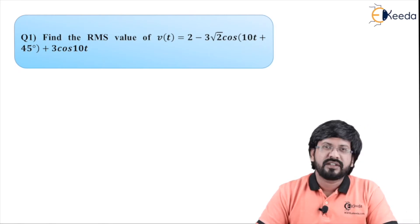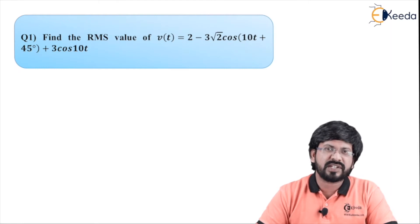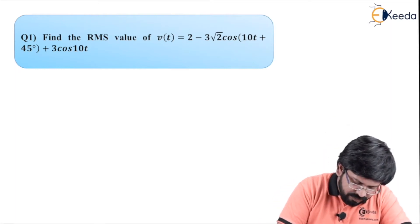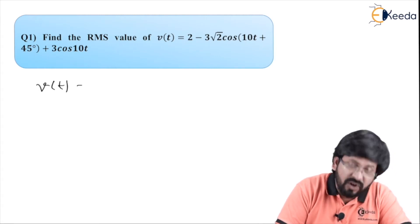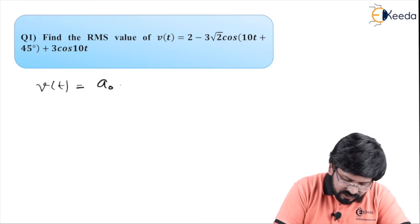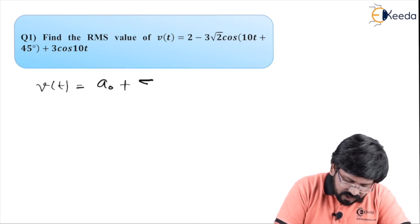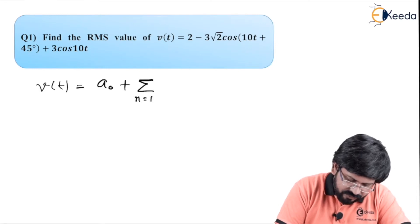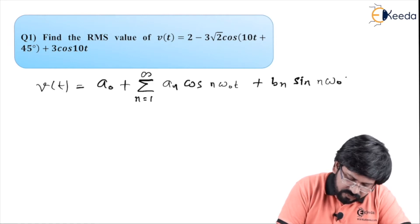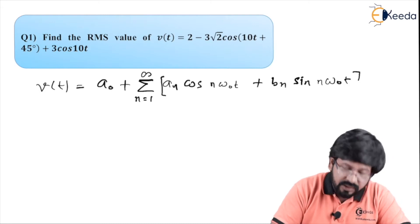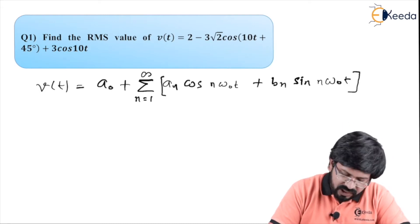Let's see how to solve this. In case a signal is given in trigonometric form and if they are asking you what is the RMS value, then we have a standard form to be followed. I can express V(t) in general as V(t) equal to a-naught plus summation n equal to 1 to infinity of a_n cos(n·ω₀t) plus b_n sin(n·ω₀t). I am sure you must have recognized this is what we call a Fourier series.